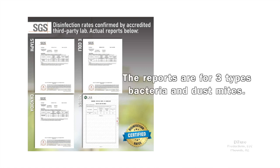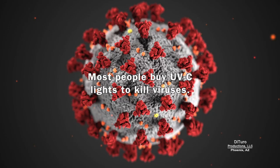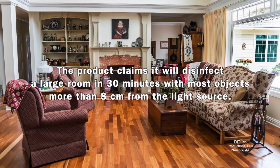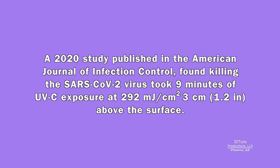This product claims it kills more than 99.9% of bacteria and viruses in a 400 to 600 square foot room in only 30 minutes, and they have the lab test reports to prove it. However, the reports are for three types of bacteria and dust mites — most people buy UVC lights to kill viruses. If you read the test conditions, the 99.99% disinfection rate was achieved after 30 minutes of exposure at just 8 centimeters. A 2020 study in the American Journal of Infection Control found killing the SARS-CoV-2 virus took 9 minutes of UVC exposure at 292 millijoules per centimeter squared, 3 centimeters above the surface.